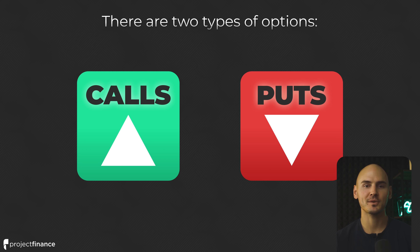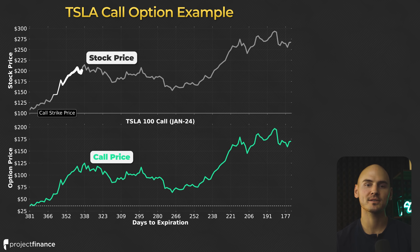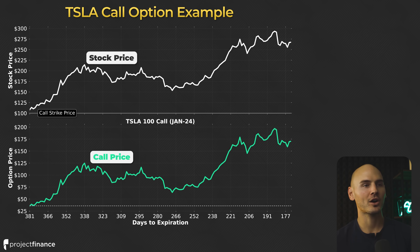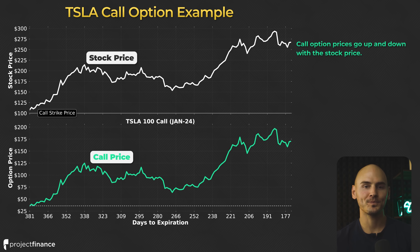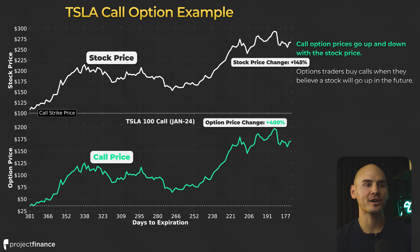Let's go through some very simple examples to demonstrate how call options and put options can profit versus changes in a stock's price. Here we're looking at a Tesla call option example over a period where Tesla's share price rose significantly, traded back down a little, and then started to trend higher again. Call option prices go up and down as the stock price goes up and down. The stock price increased 145% over this entire period and this specific option increased 400% over the same exact period. Options traders buy calls when they believe a stock will go up in the future.